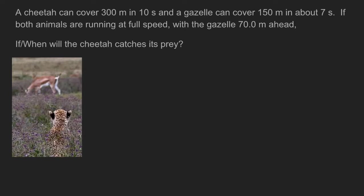So here's the setup. A cheetah can cover 300 meters in 10 seconds and a gazelle can cover 150 meters in about 7 seconds. If both animals are running at full speed and the gazelle happens to have a 70 meter head start, so it's 70 meters ahead, if slash when will the cheetah be able to catch his prey.